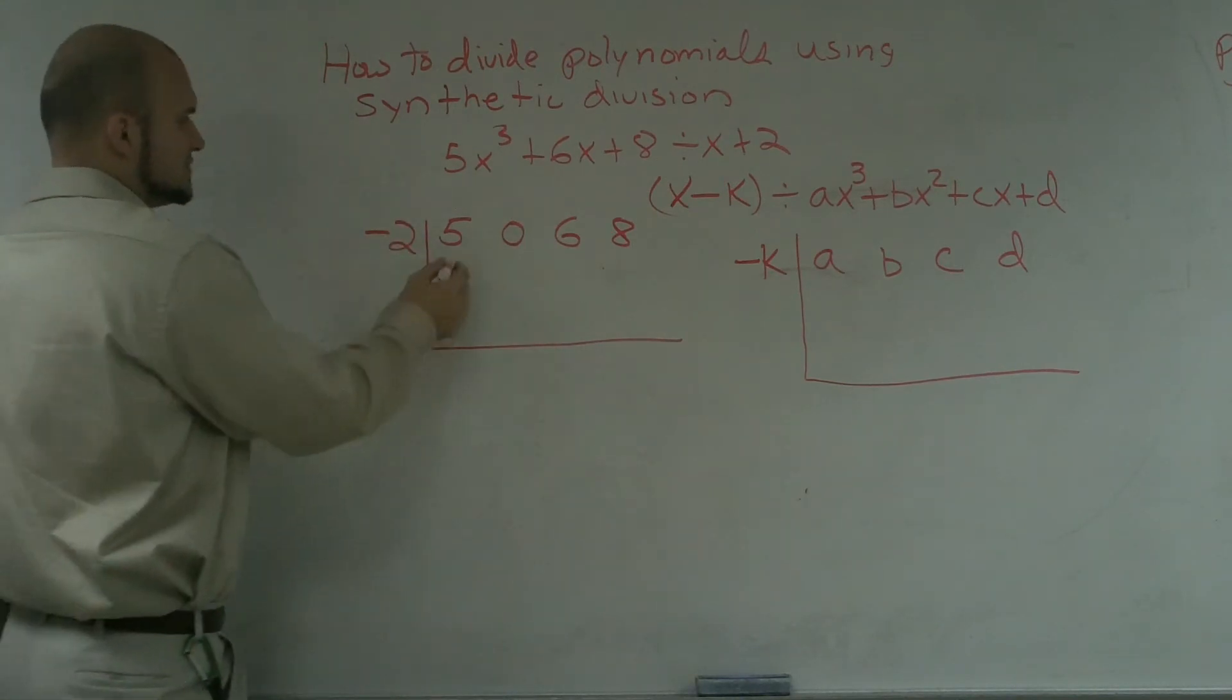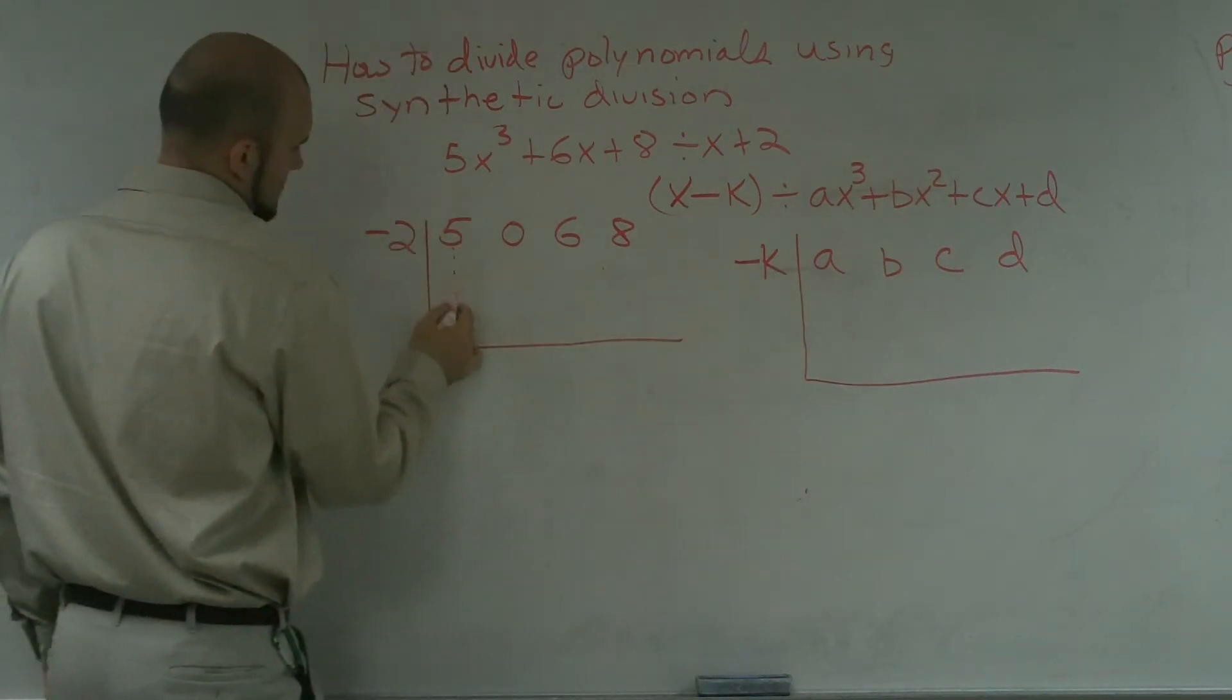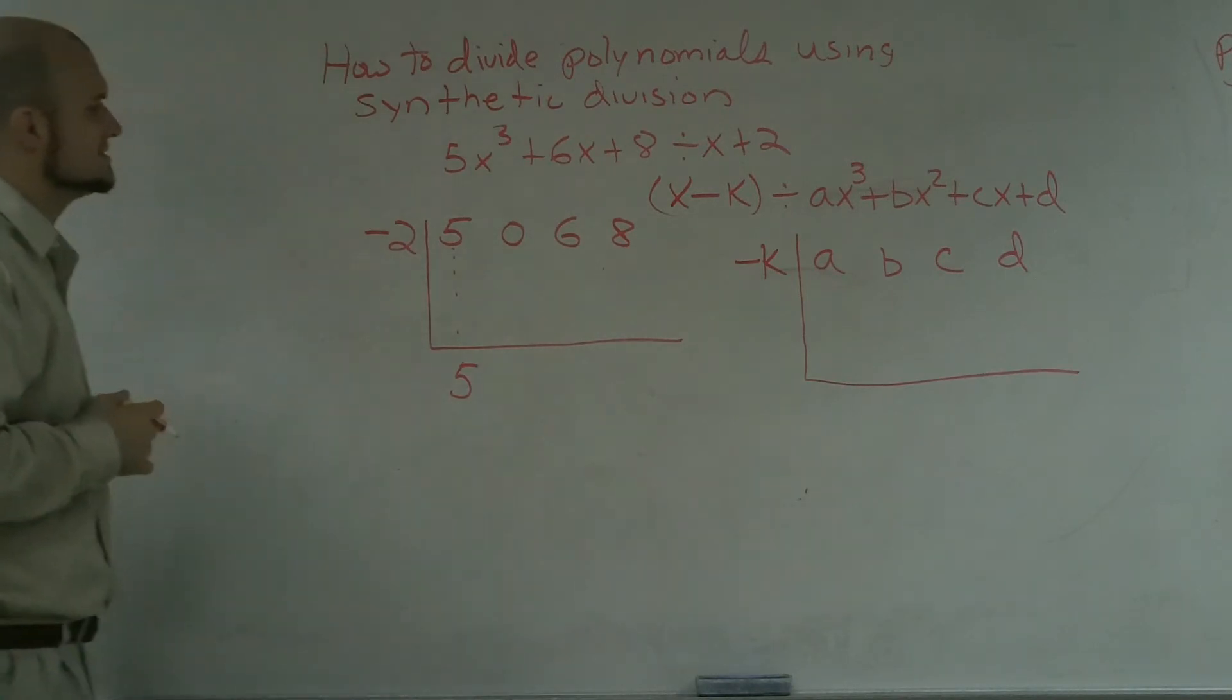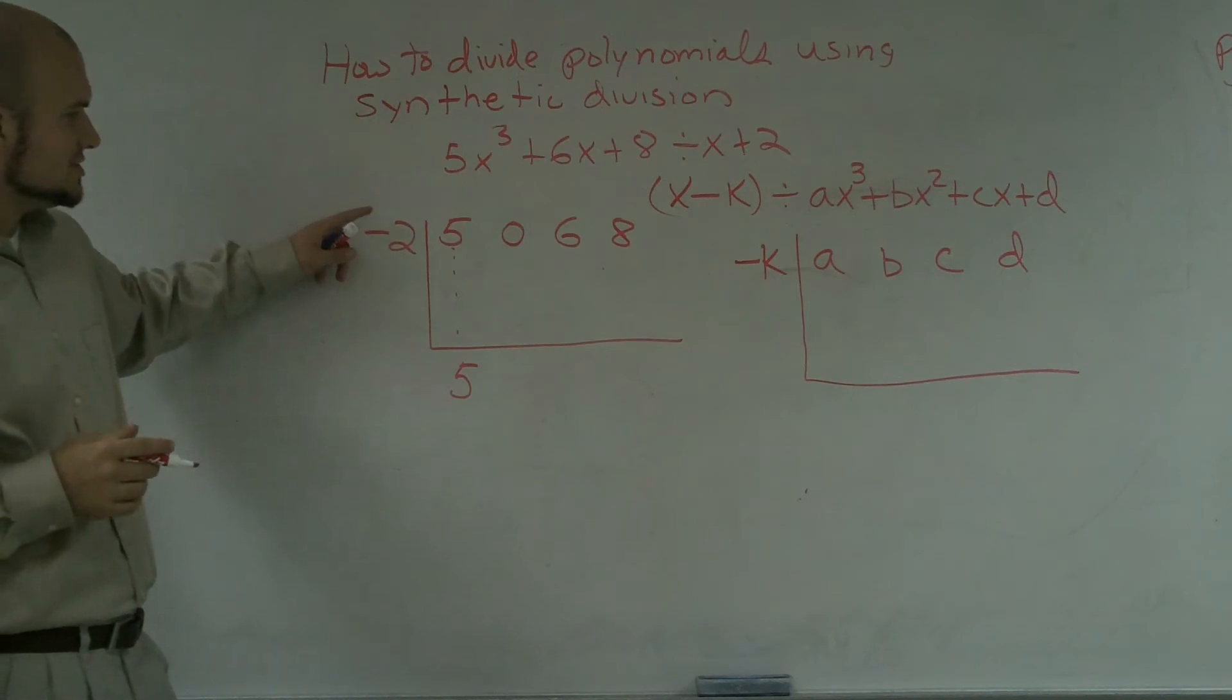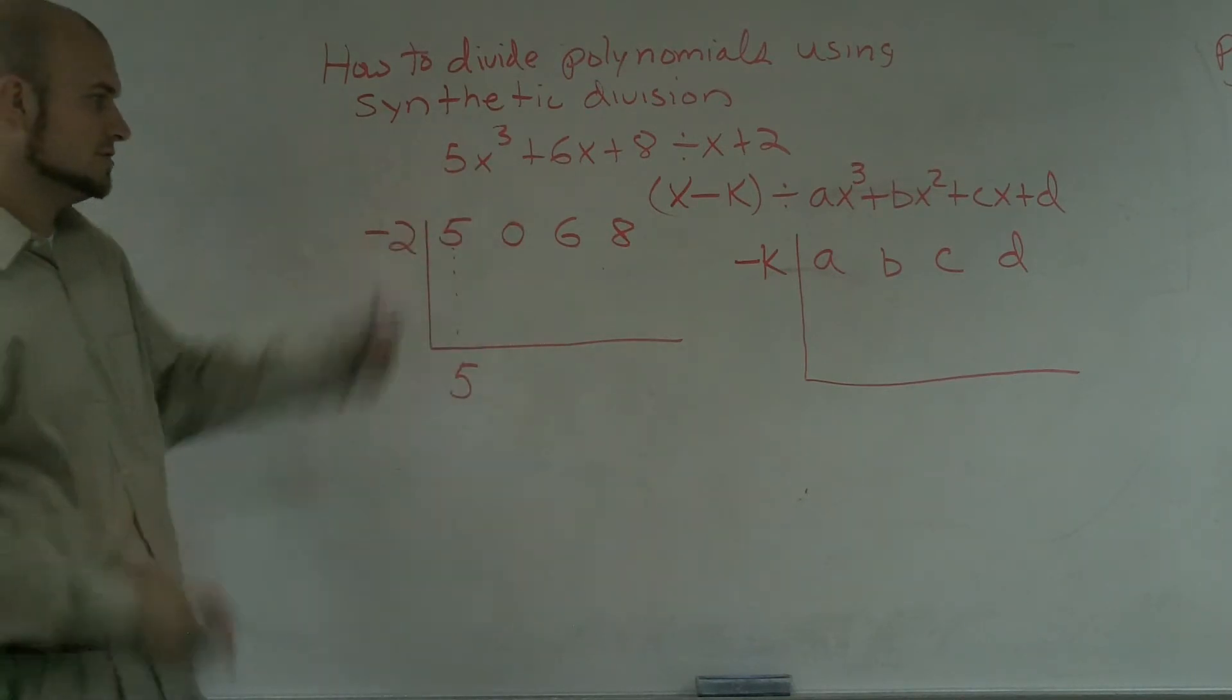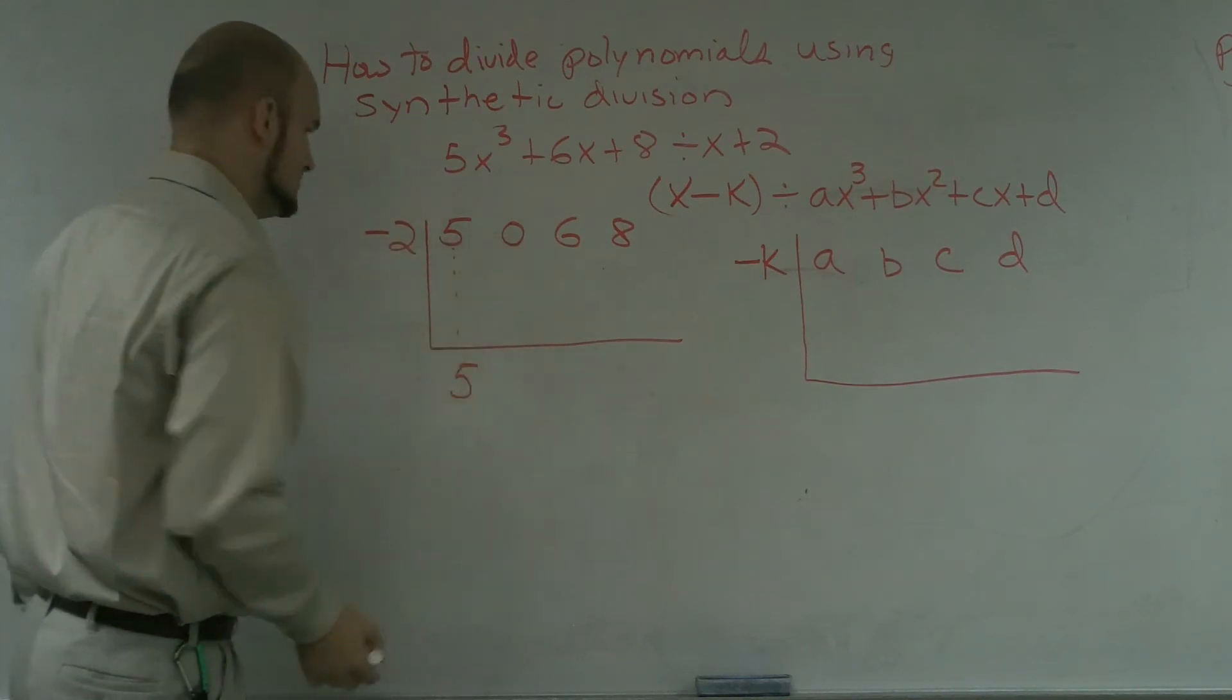And what we simply do is we drop down the leading coefficient to become 5. Then what you're going to do is you're pretty much going to multiply your k times this number, and then you're going to bring it into this, and then you add vertical. So you're going to multiply diagonal, add vertical.